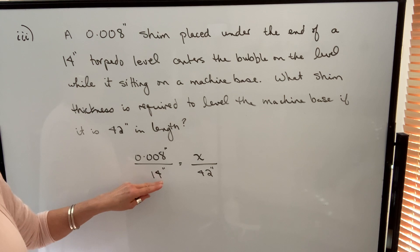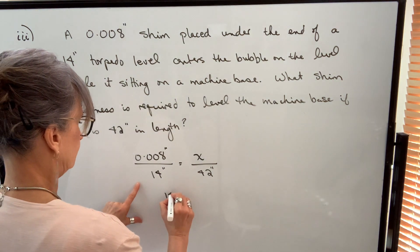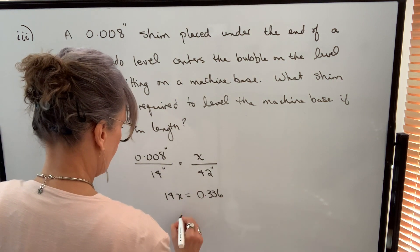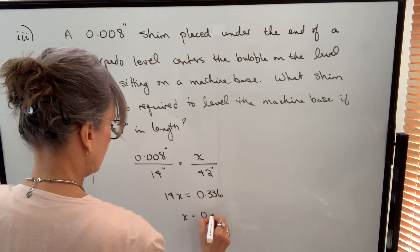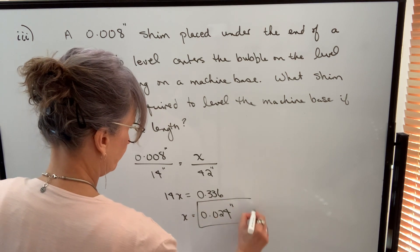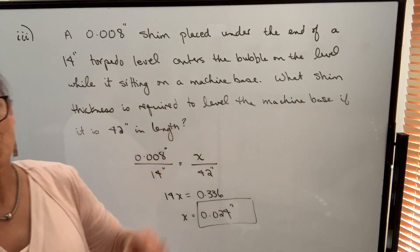So again, we have to take into consideration that actual length of the level. We cross multiply, divide both sides by 14 to solve for x. Therefore, we need 24 thousandths shim thickness to level the machine base.